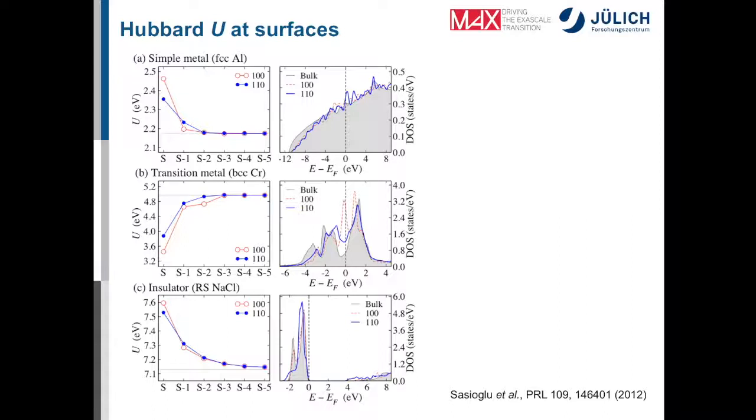For example in the case of BCC chromium, it's a transition metal, we see just the opposite behavior. The Hubbard parameter is actually smaller than the bulk value and that is because of an electronic effect that is seen in the density of states. So the shaded area shows you the density of states of the bulk which has around the Fermi energy a minimum. If you are on the surface this minimum is filled by surface states and in particular in the 100 surface termination it even becomes a peak.